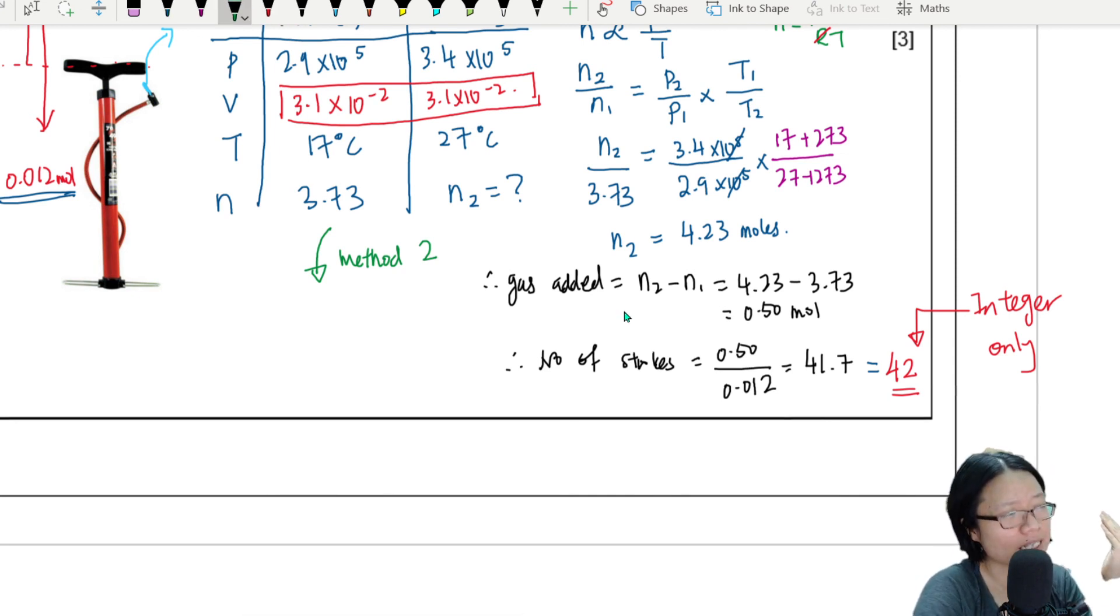Okay, so you may be wondering, teacher, what is method 2? Method 2: easy. You can use PV is equal to nRT but for final conditions. Okay, so I'm going to substitute it in quickly because we already have the values.